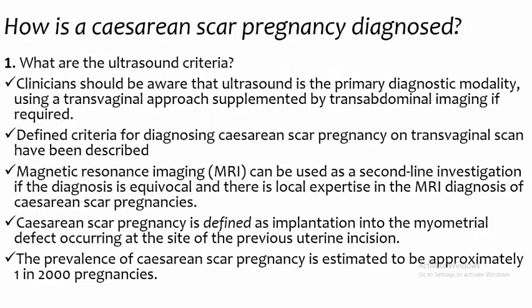How is a caesarean scar pregnancy diagnosed? Clinicians should be aware that ultrasound is the primary diagnostic modality, using a transvaginal approach supplemented by transabdominal imaging if required. Valid criteria for diagnosis on transvaginal scan have been described. MRI can be used as a second-line investigation if the diagnosis is equivocal and there is local expertise in MRI diagnosis of caesarean scar pregnancy.